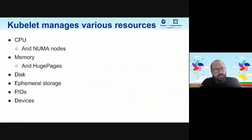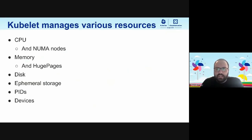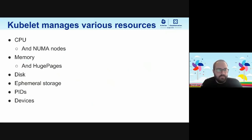As Sergey noted, in SIG Node one of our primary responsibilities is to figure out how to give pods access to host resources and how to make sure those resources are fairly shared among pods or containers on the same node. Today Kubelet supports a number of resources — CPU, memory, disk, ephemeral storage — that you often see in your pod specs when deploying to Kubernetes. There are also resource types you don't see in the foreground that the Kubelet manages in the background for fair sharing, such as PIDs. We also support frameworks to allow device plugins to advertise dynamic resources for your applications to consume. This is a rich and growing set of diverse resources that we need to manage in the SIG.